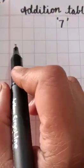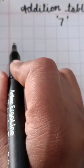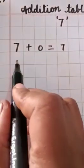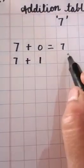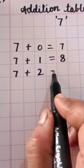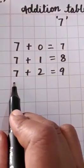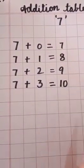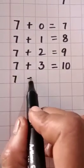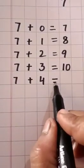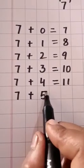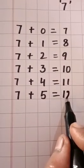Okay kids? Now start writing. From here, 7 plus 0 equal to 7. 7 plus 1 equal to 8. 7 plus 2 equal to 9. 7 plus 3 equal to 10. 7 plus 4 equal to 11. 7 plus 5 equal to 12.